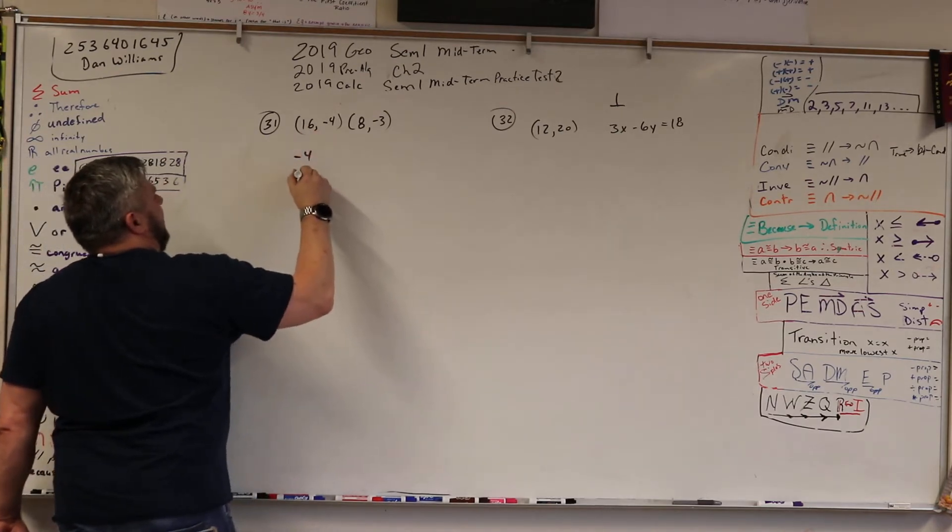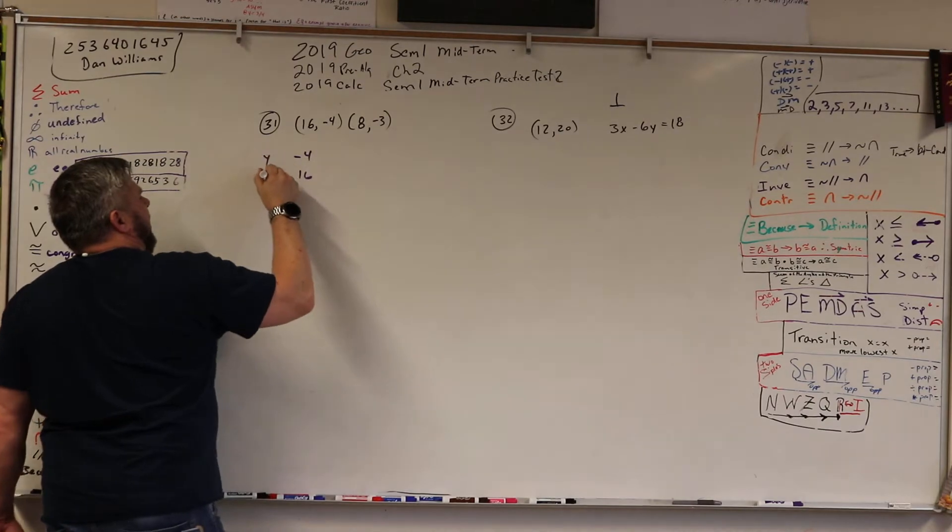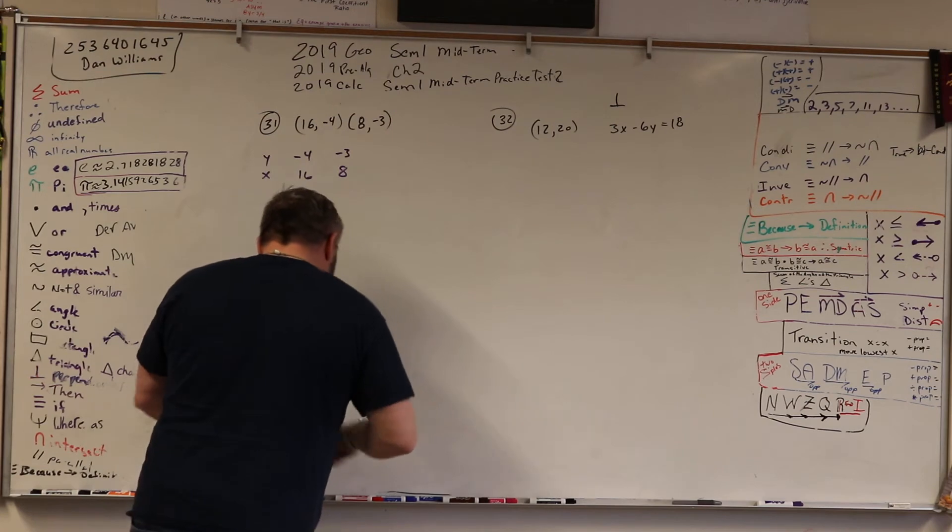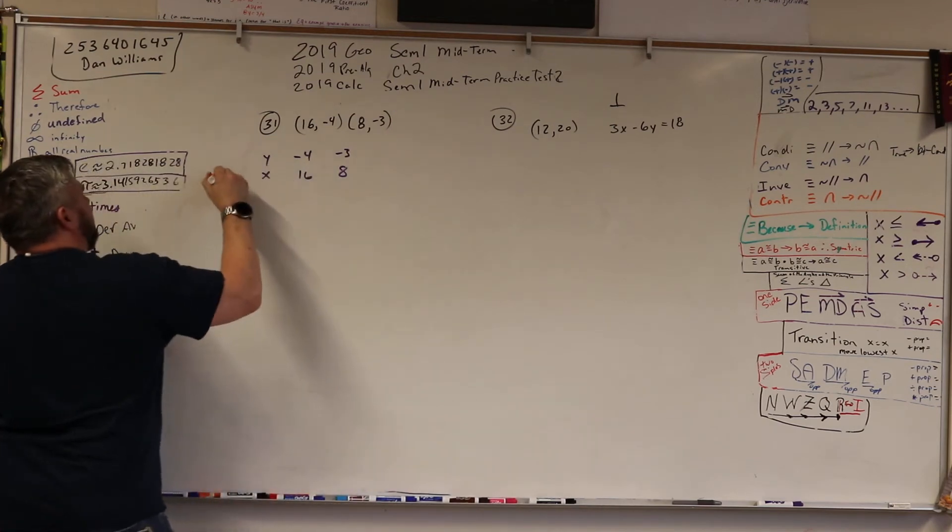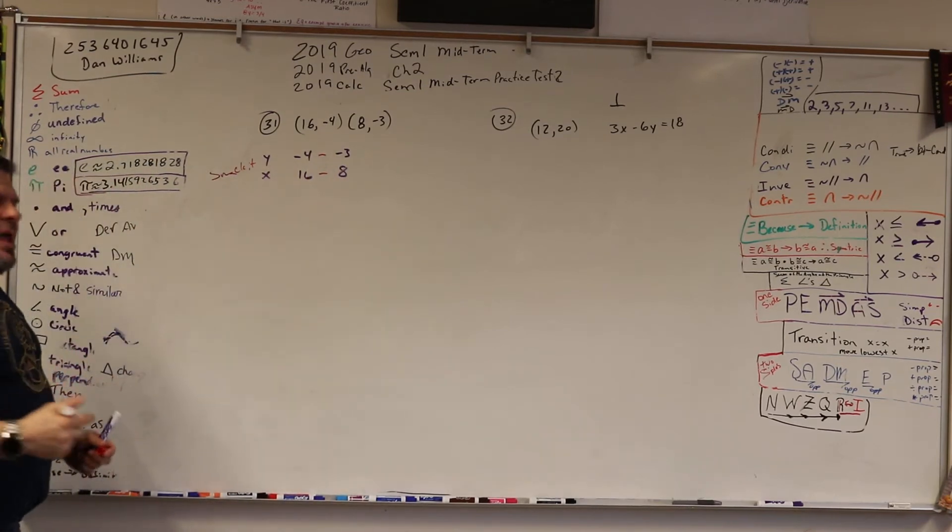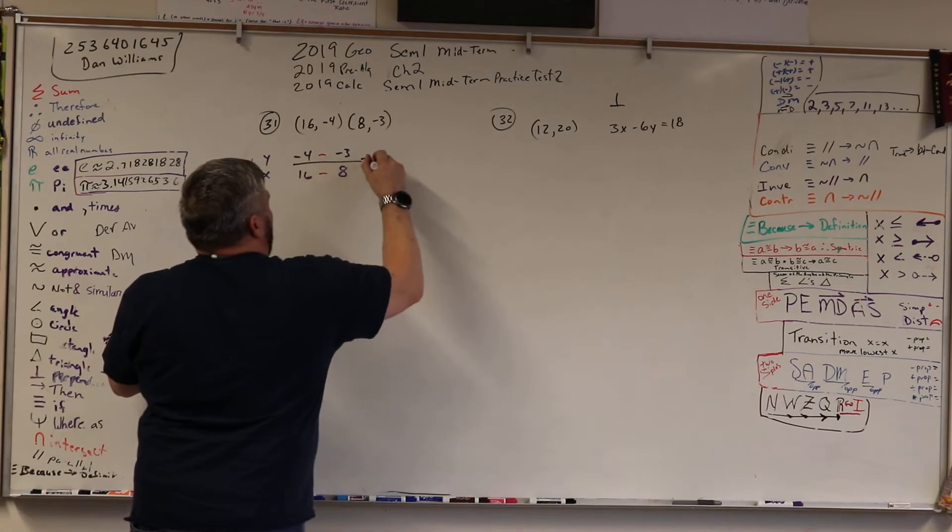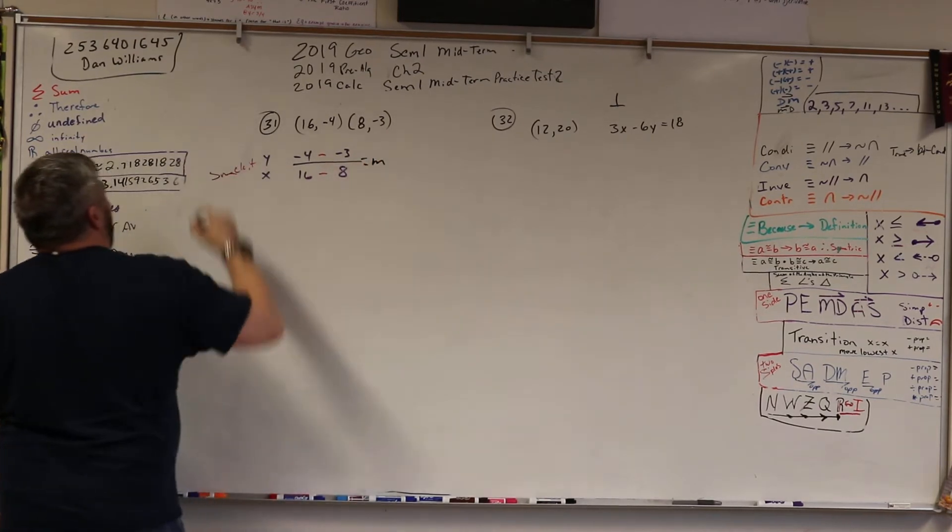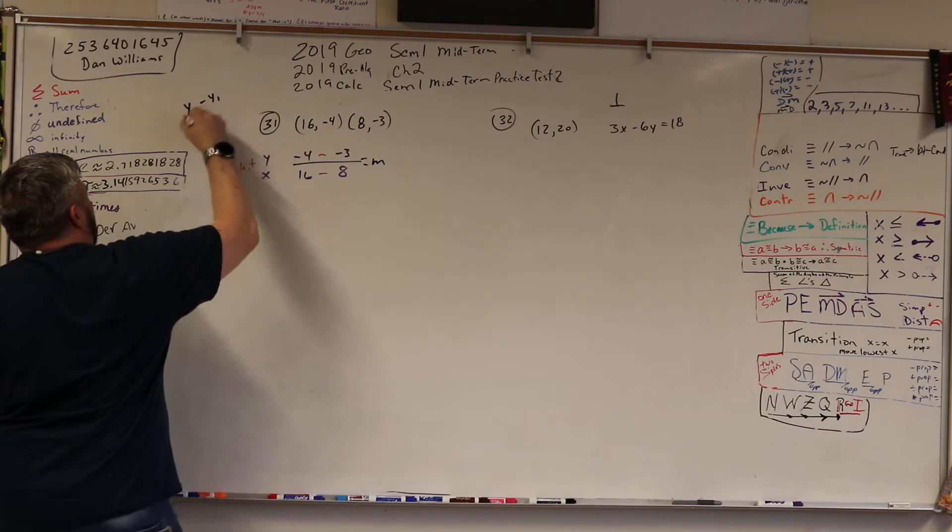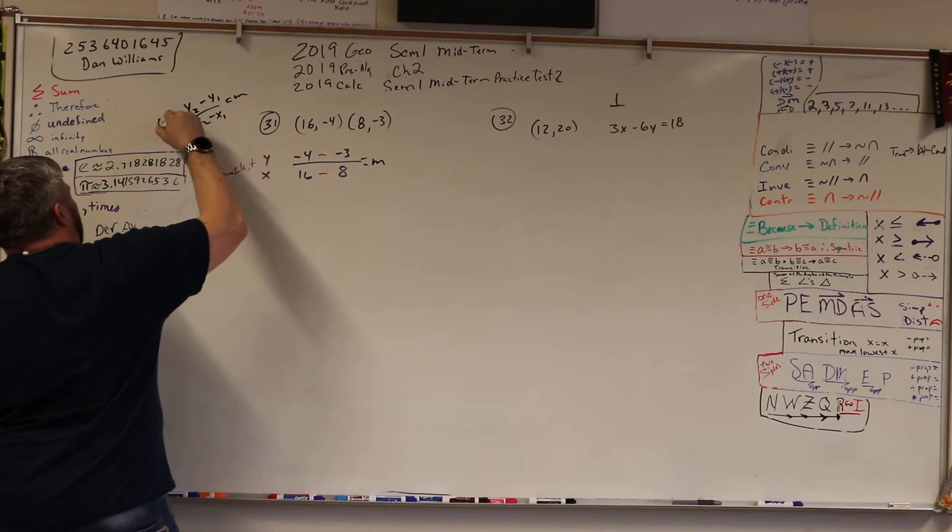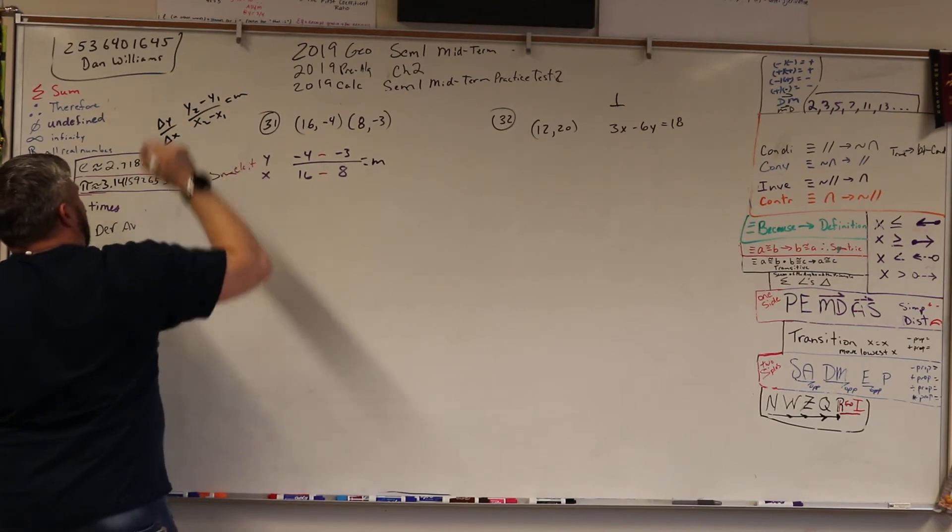I got negative 4 over 16, y over x, negative 3 over 8, and then smack it like they said. So that's minus and minus, right? That is our slope. So remember, y sub 2 minus y sub 1 over x sub 2 minus x sub 1 is equal to m, or the delta y over delta x.